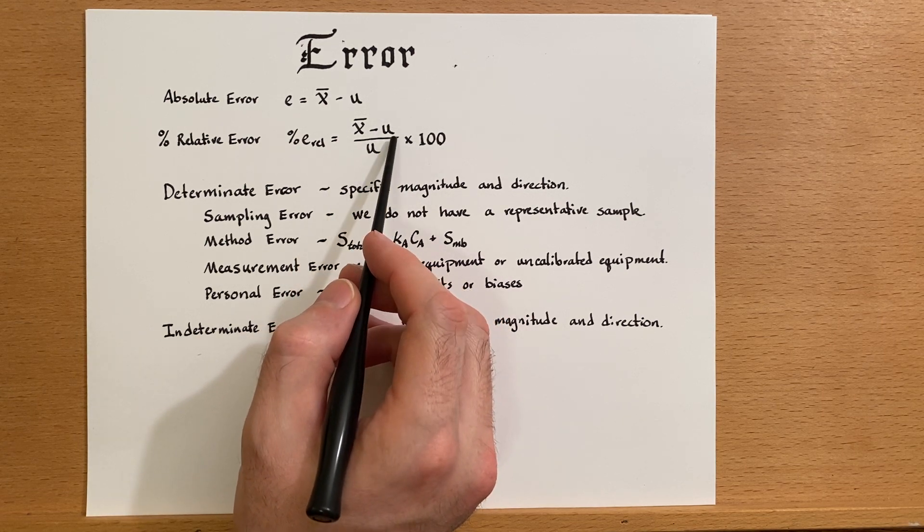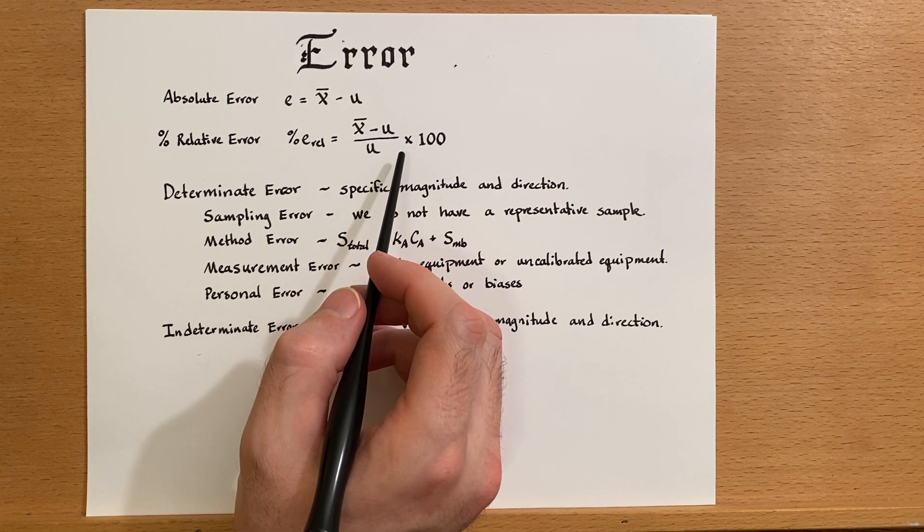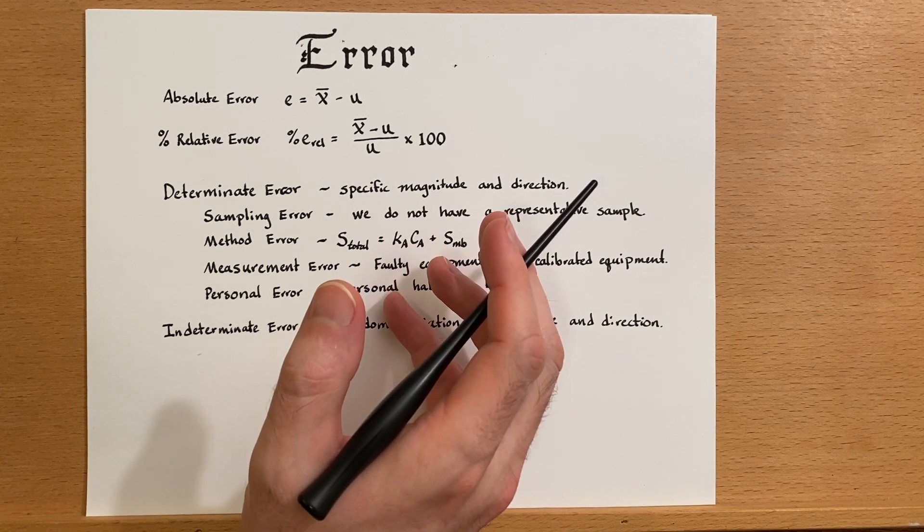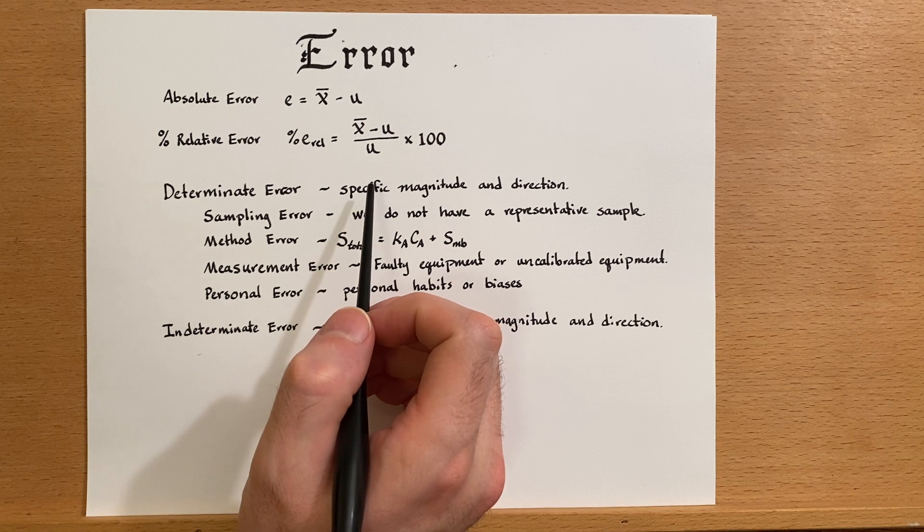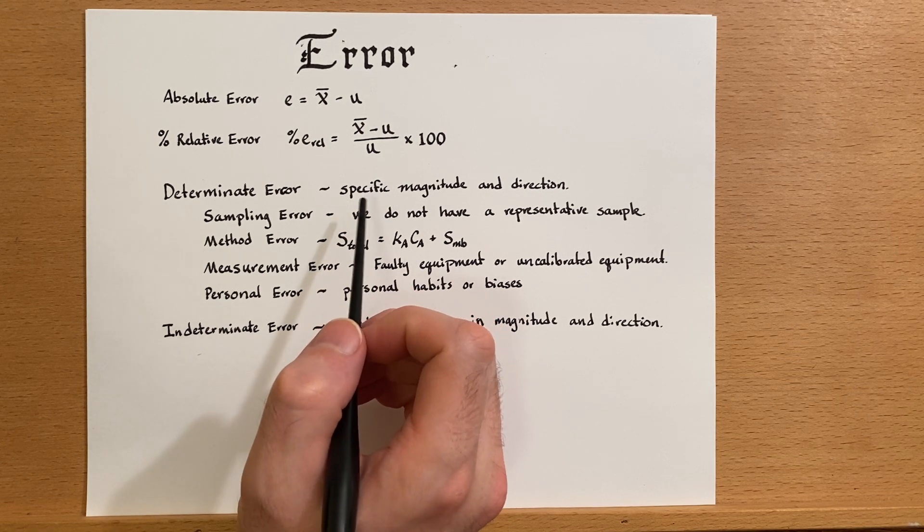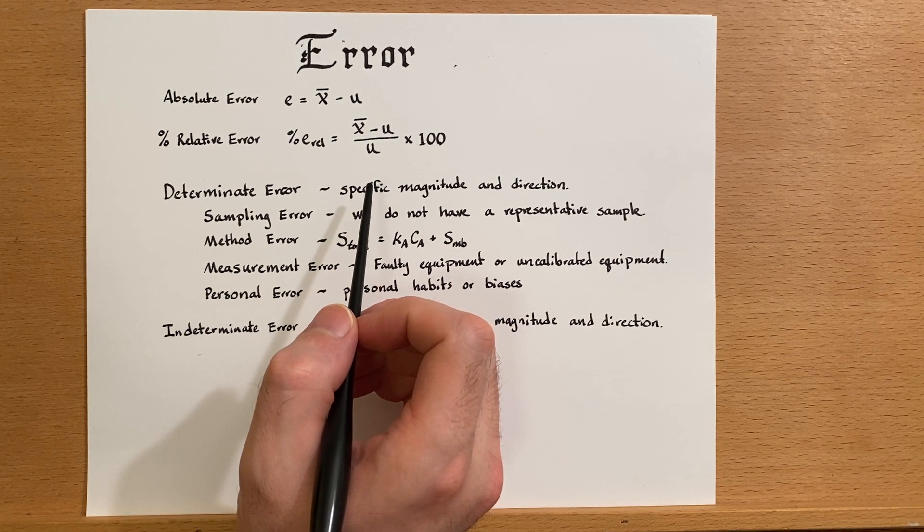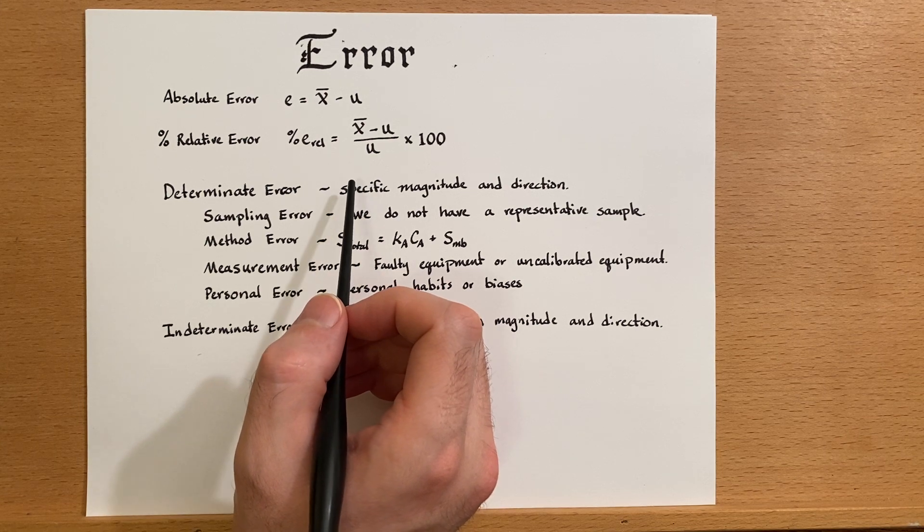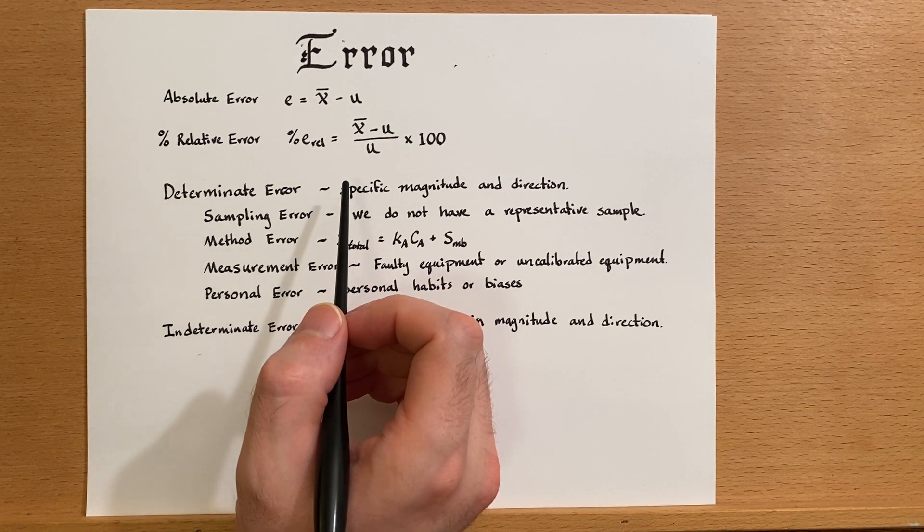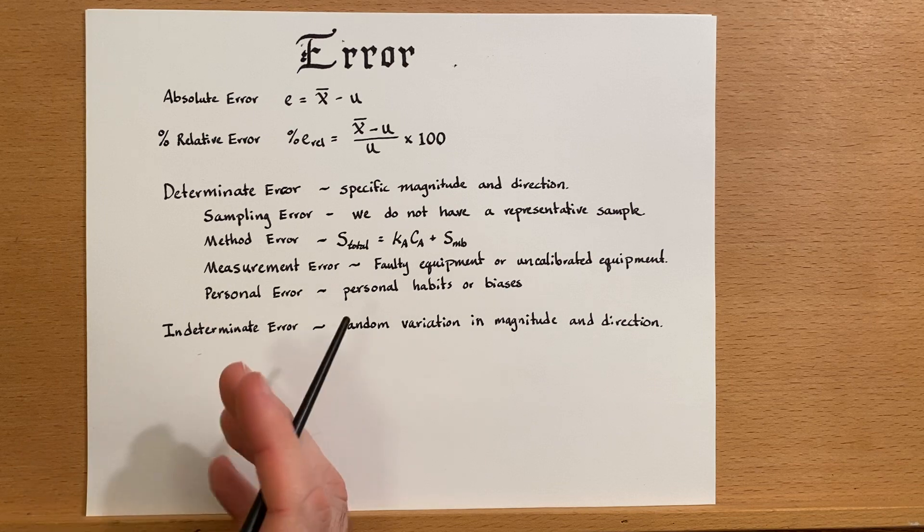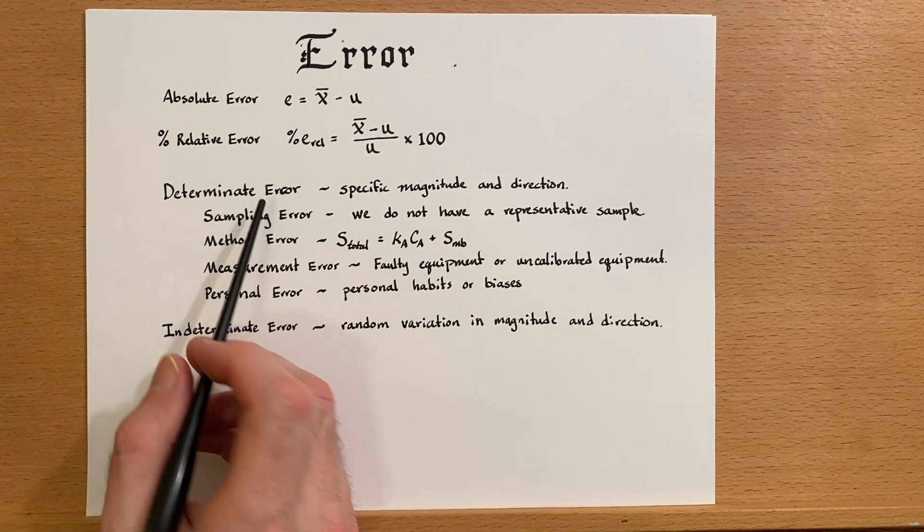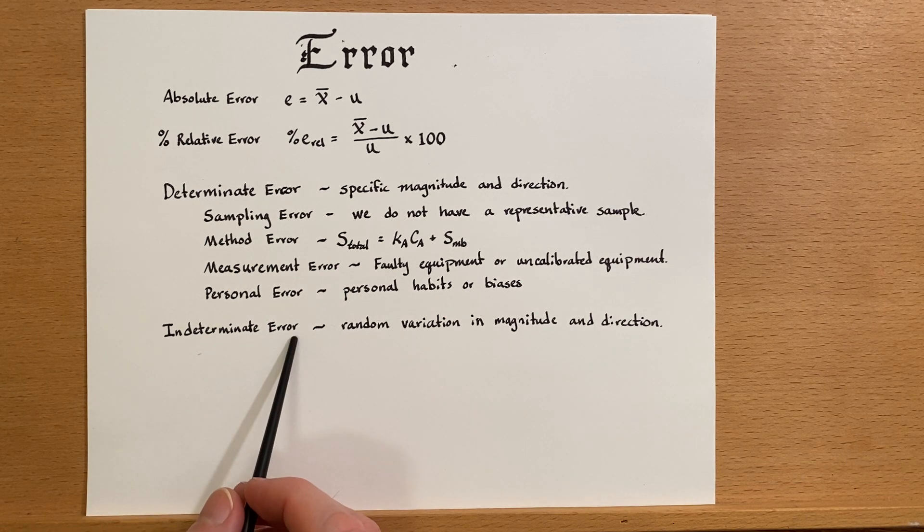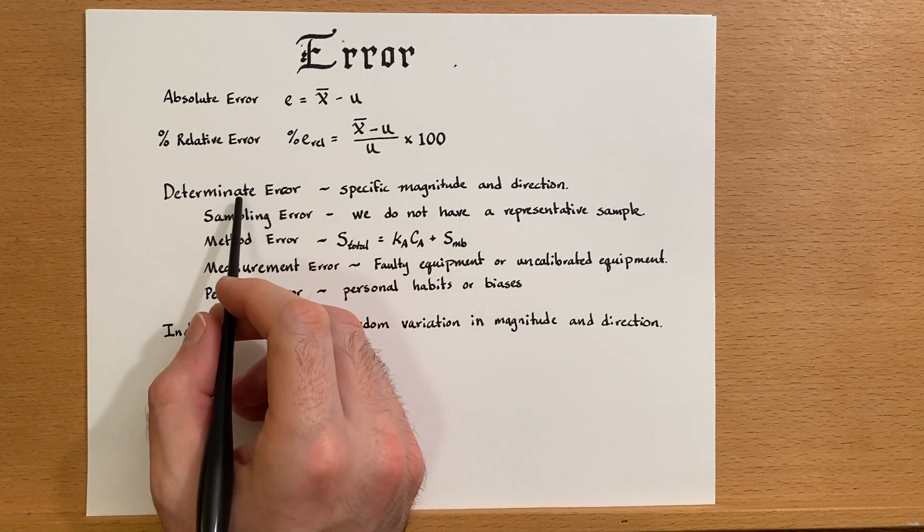Those are ways of calculating the error based on a known value. Sometimes we don't know the value and then these would be impossible to calculate. There are other ways of estimating the error using statistics, but we'll have to talk about that later.